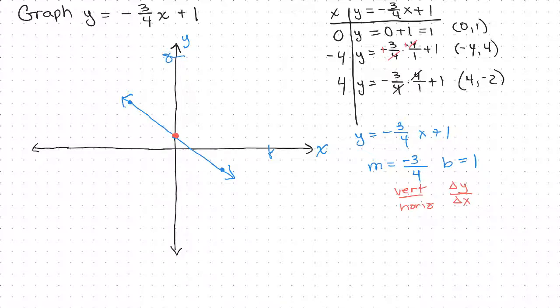From this point, I need to go in the horizontal direction 4 spaces, which is positive 4 to the right: 1, 2, 3, 4. And then in the vertical direction, I'm going to go down 3: 1, 2, 3, and I would get this point. When you connect those points, you get the same line.